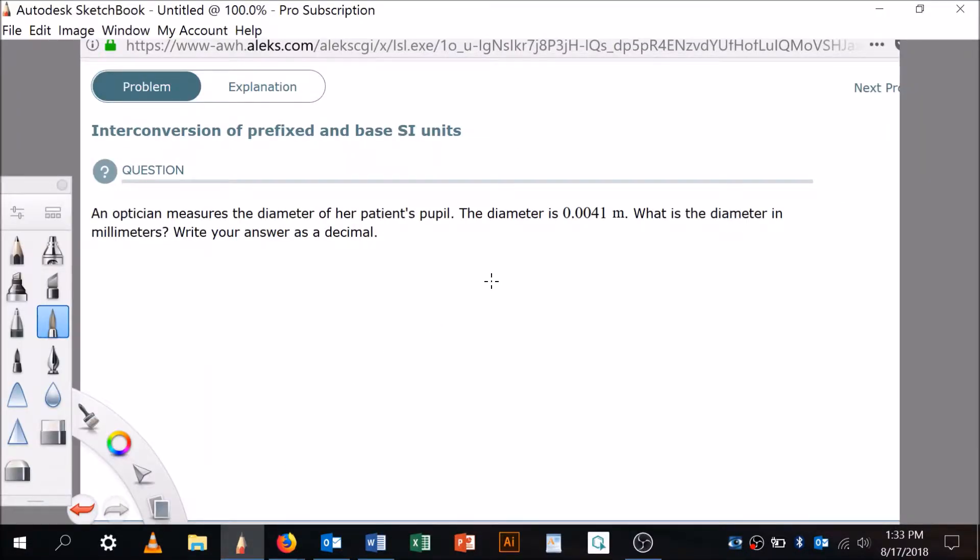So here's what we got: interconversion of prefixed and base SI units. An optician measures the diameter of a patient's pupil. The diameter is 0.0041 meters. What is the diameter in millimeters? Okay, that's the question right there.